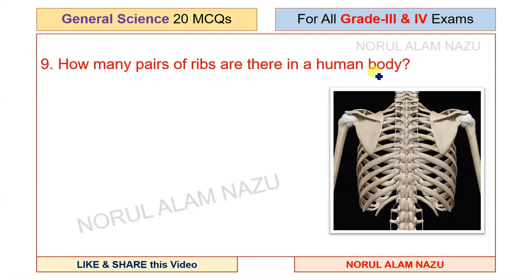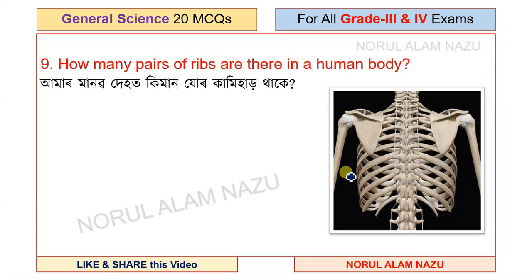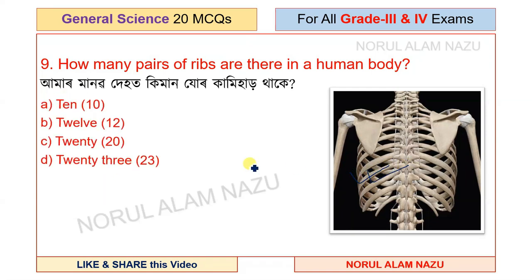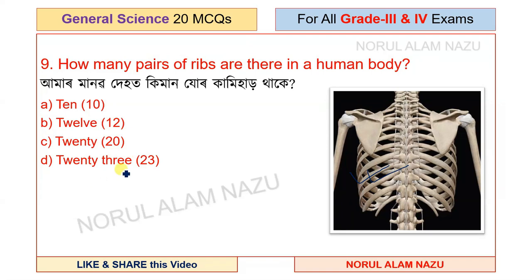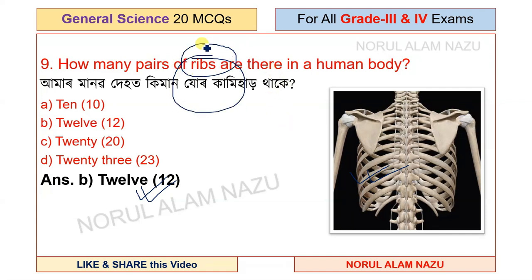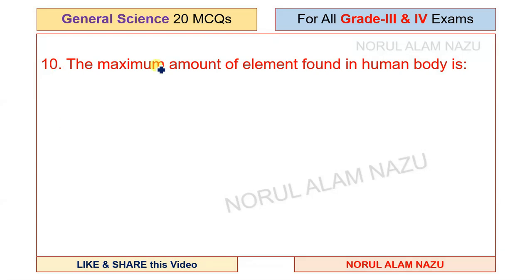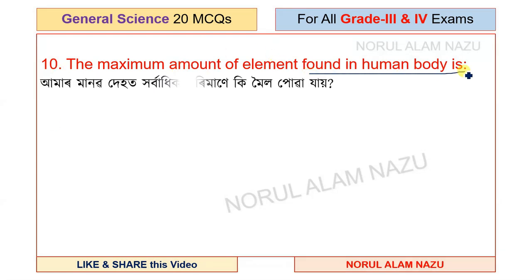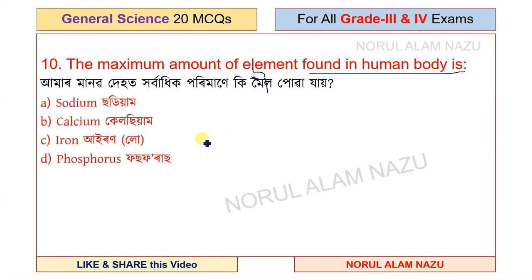How many pairs of ribs are there in a human body? Also, what is the maximum element found in the human body? The options include sodium, calcium, iron, and phosphorus. The answer is calcium.